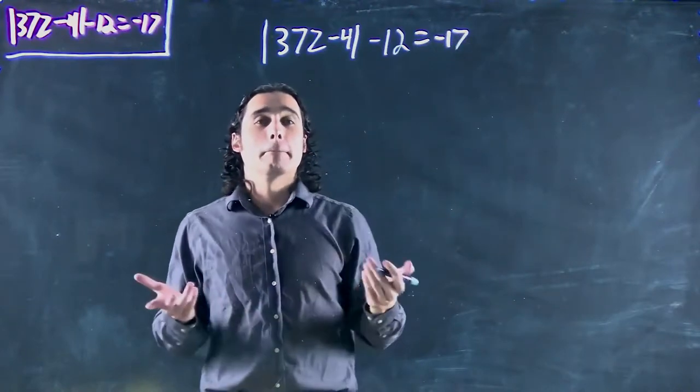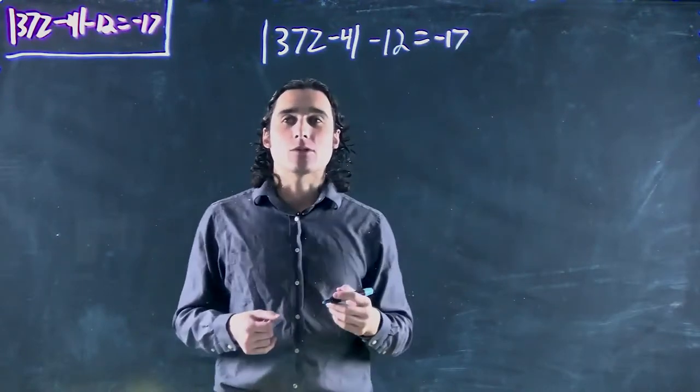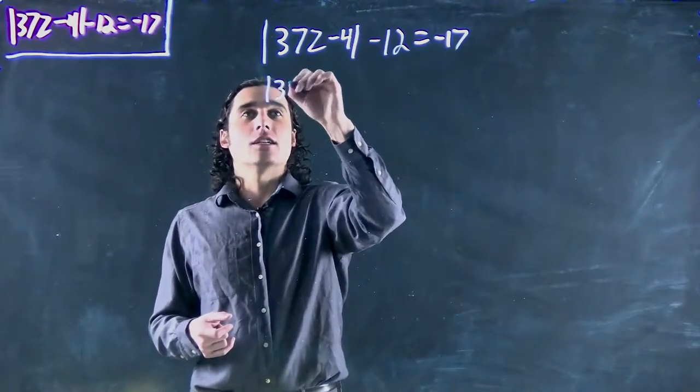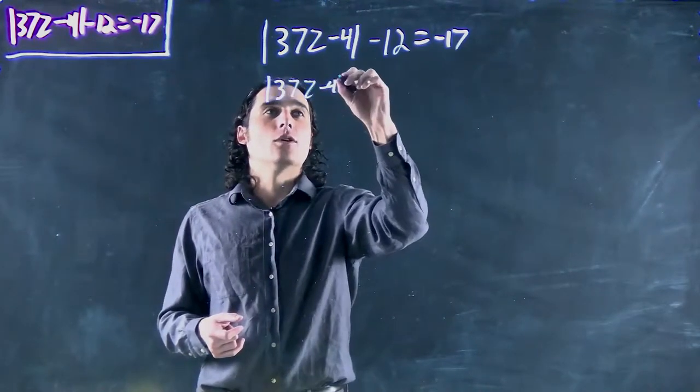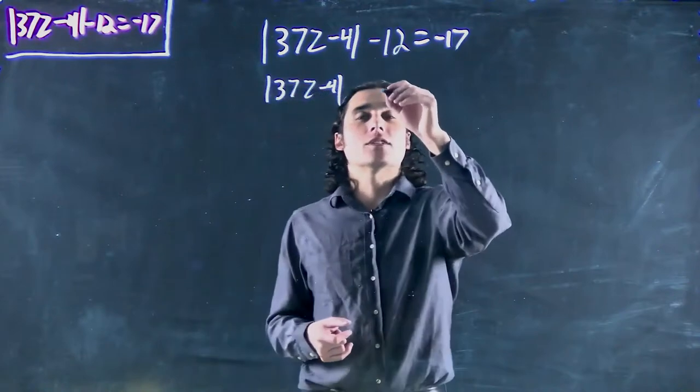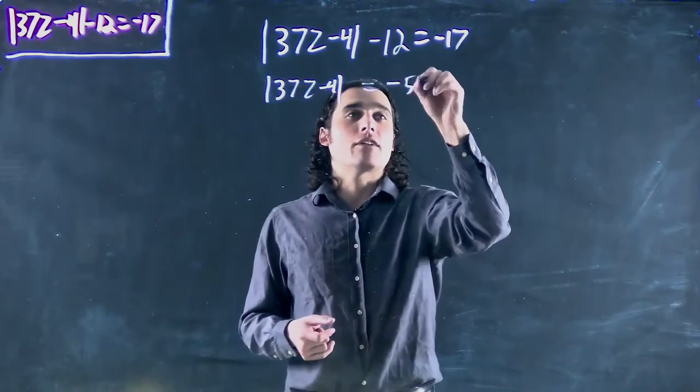Okay, well again if we want to get rid of absolute value we've got to get it on its own. So we go 37z minus 4 and we're going to add 12 to both sides so we get minus 5 on that side.